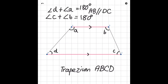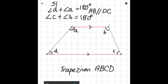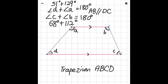Now we're going to prove this by finding the angle sizes. Angle D is 51 degrees and angle A is 129 degrees; 51 plus 129 gives us 180 degrees — correct. For the next pair, angle C is 68 degrees and angle B is 112 degrees; 68 plus 112 also gives us 180 degrees. So that's proven.